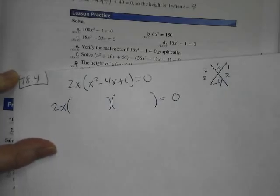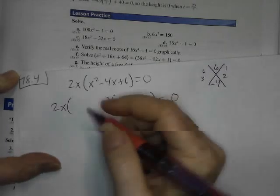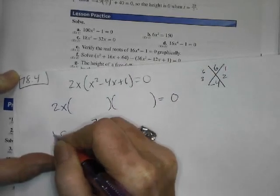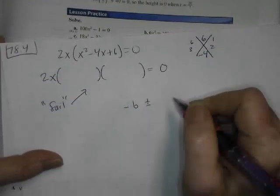So what do you do when you can't do anything else? We have to give up on our dreams of factoring it. So what do you bust out whenever you can't factor something? Okay, that was a fail. I'm going to write fail. That was a fail.